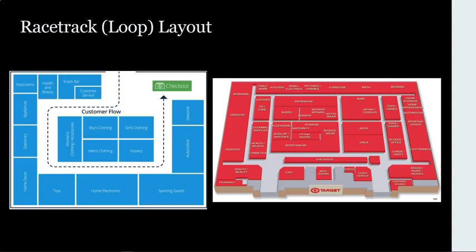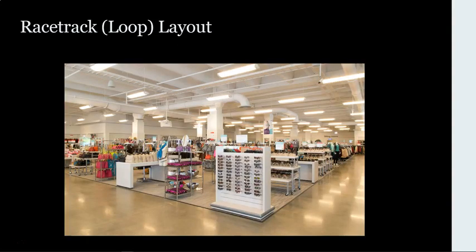Essentially, the racetrack layout tries to increase the amount of merchandise customers see, which ultimately leads to increased unplanned purchasing. A key feature of the racetrack layout is that retailers use low fixtures to encourage customers to continue walking around the loop. Customers can see into other departments, past the area they are currently in, and see merchandise located in other sections of the store.